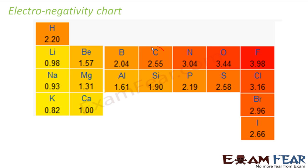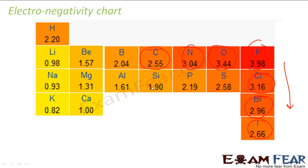The most important value to remember: carbon is 2.55. Nitrogen, oxygen, chlorine — you have to remember these. If you go down the periodic table, electronegativity goes down. Carbon and hydrogen are almost the same: 2.2 and 2.5. Boron is also sometimes required. So remember: hydrogen, boron, carbon, nitrogen, oxygen, chlorine, bromine, iodine — this should be sufficient.